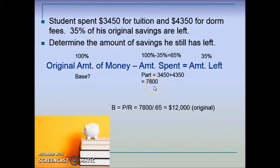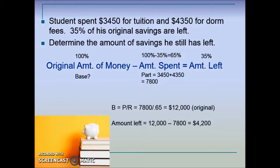We know they started with $12,000 and the problem told us they spent $7,800. Subtracting gives us the final answer: this student has $4,200 remaining in savings.